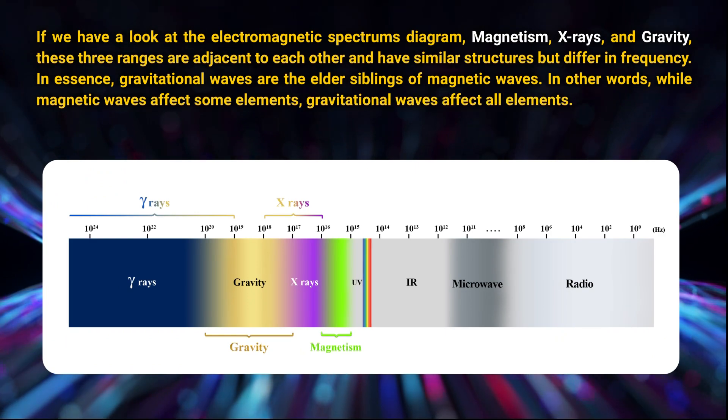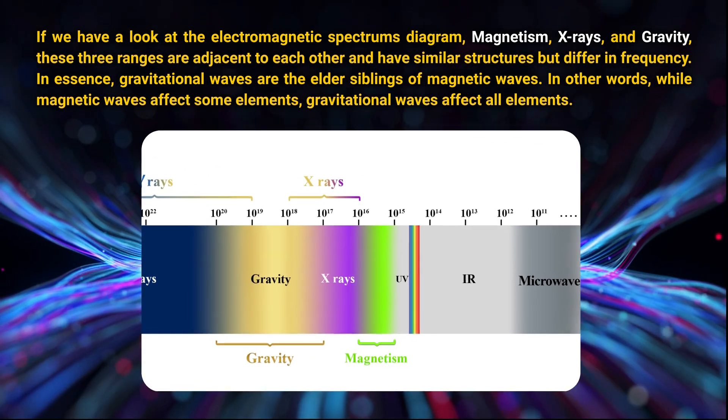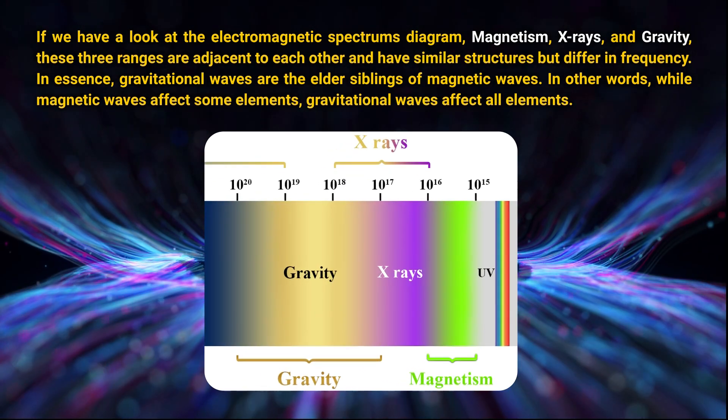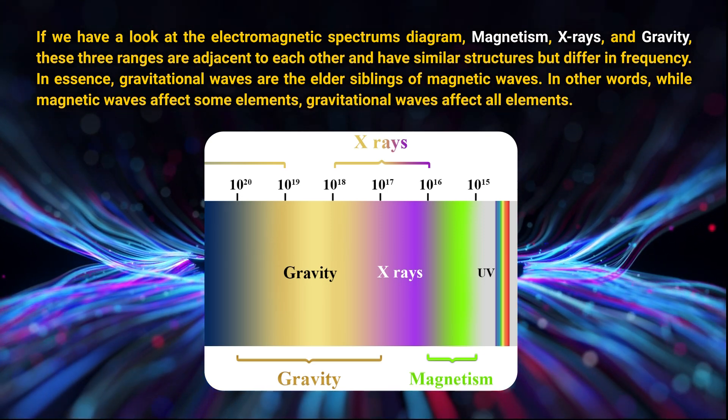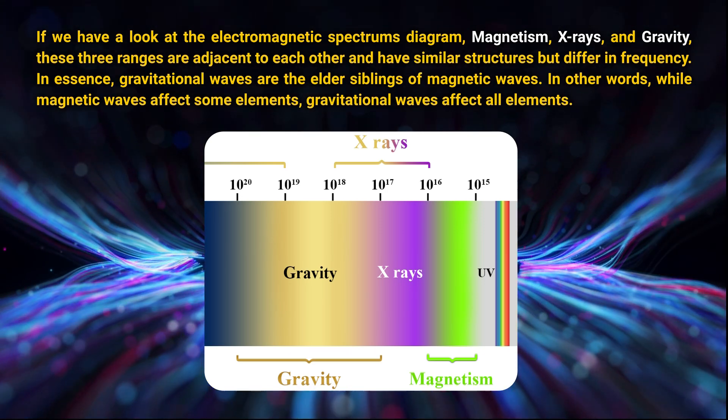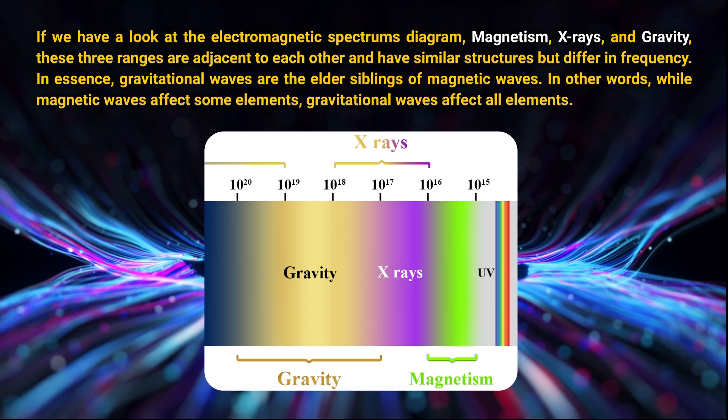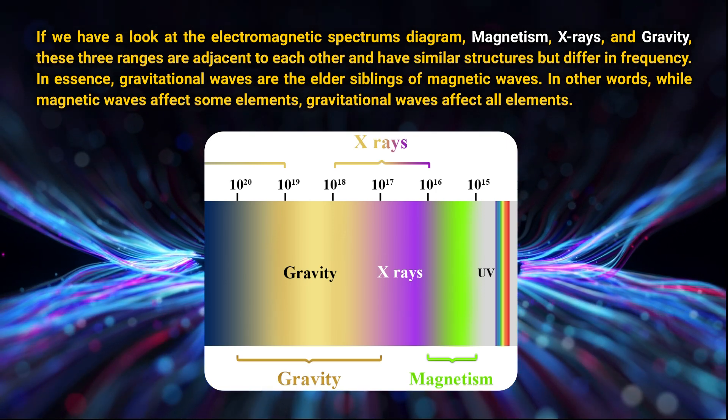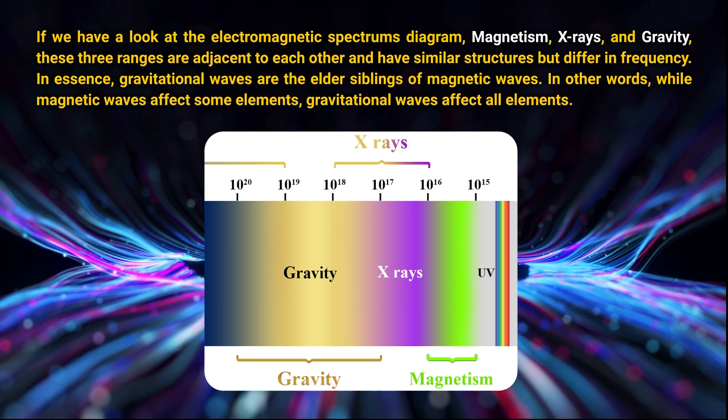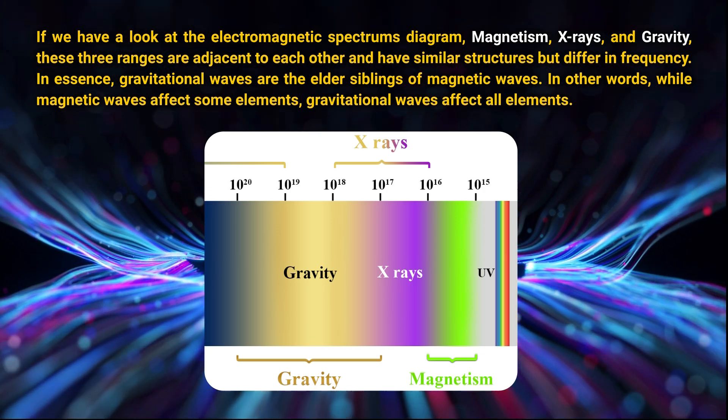If we have a look at the electromagnetic spectrum's diagram, magnetism, x-rays, and gravity, these three ranges are adjacent to each other and have similar structures but differ in frequency. In essence, gravitational waves are the other siblings of magnetic waves. In other words, while magnetic waves affect some elements, gravitational waves affect all elements.